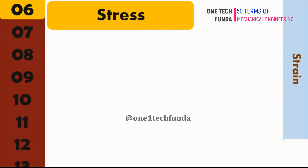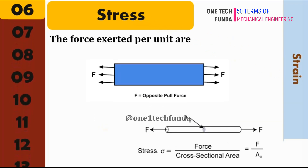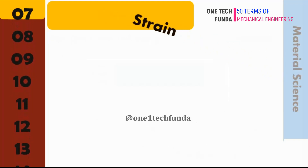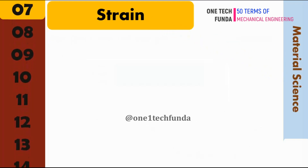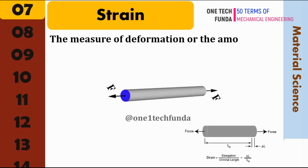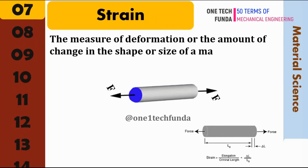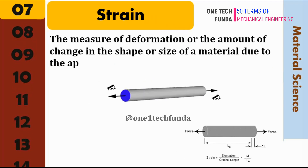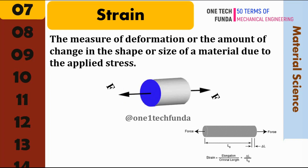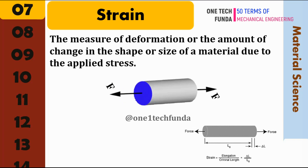Stress: in mechanics, it is defined as the force exerted per unit area within materials. Strain: in mechanics, it is defined as the measure of deformation, or the amount of change in the shape or size of a material due to the applied stress.